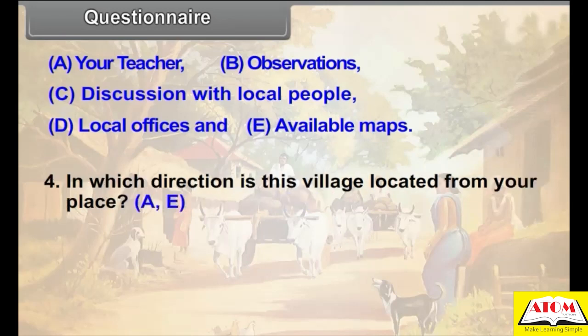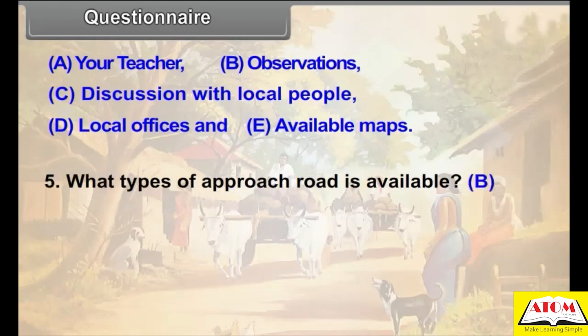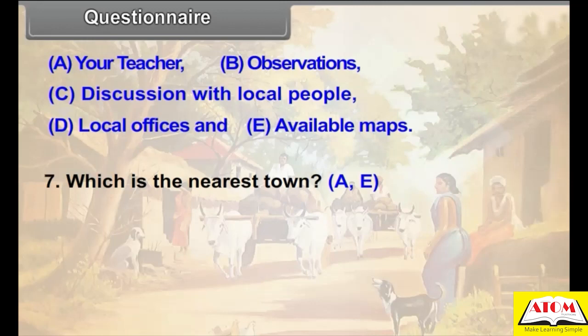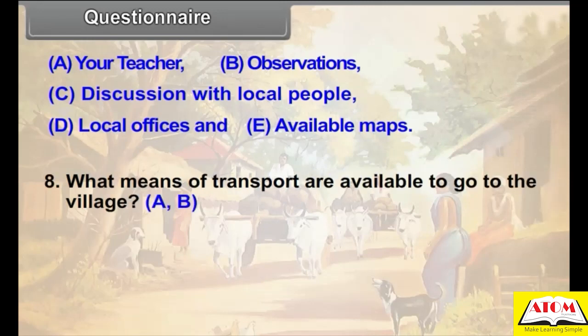Question 5: What type of approach road is available? (Source: B.) Question 6: Is there any village panchayat office in the village? (Sources: C, D.) Question 7: Which is the nearest town? (Sources: A, E.) Question 8: What means of transport are available to go to the village? (Sources: A, B.) Question 9: In which physical region are the village and its surroundings located — mountain, plateau, or plain? (Sources: B, D.)